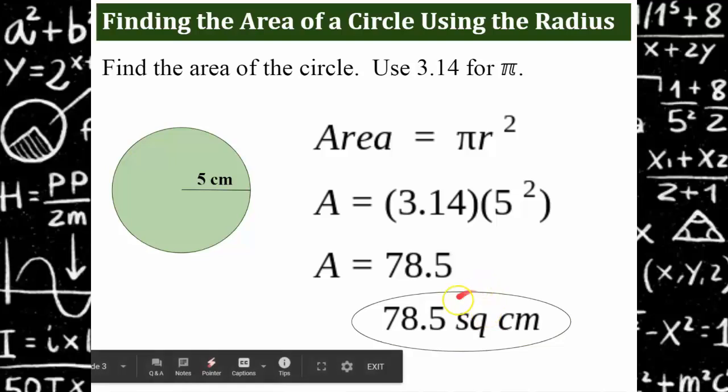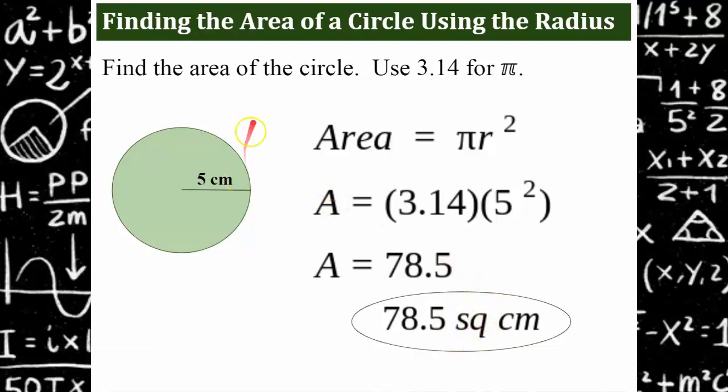That's 78.5 square centimeters. Our units here are squared because it's area — we're multiplying two different dimensions.